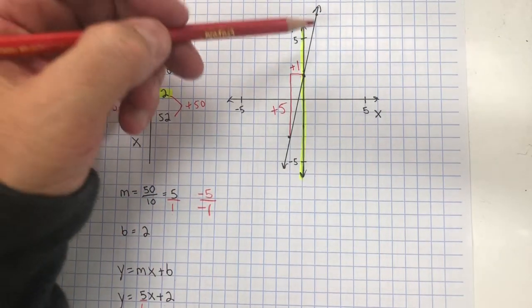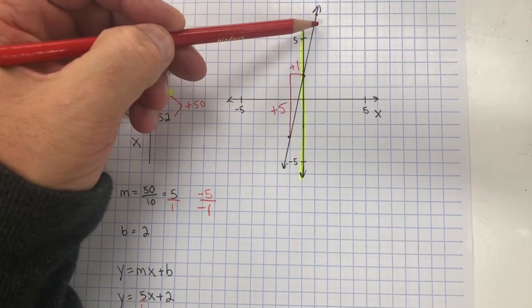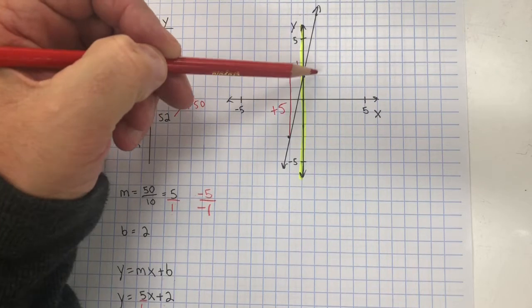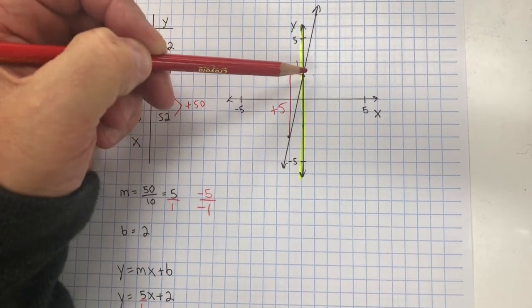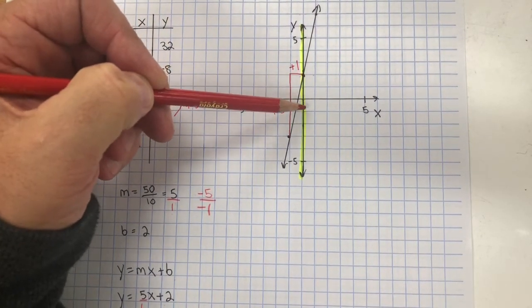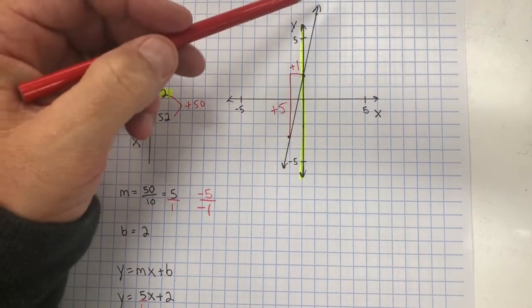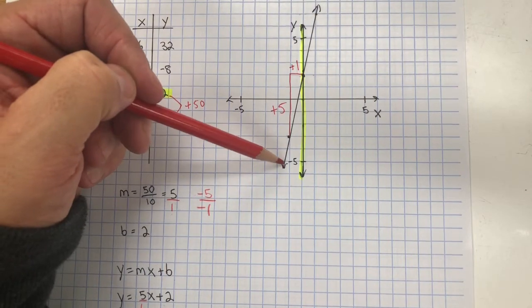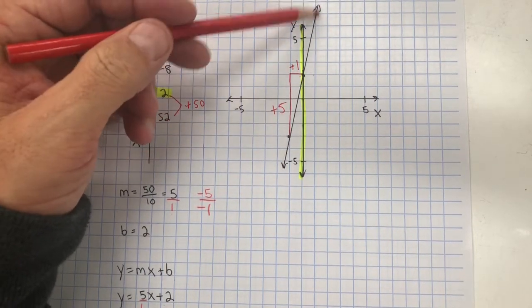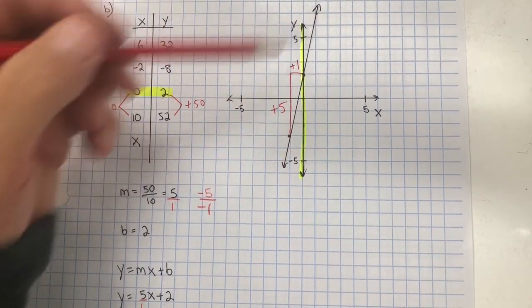But you could also do negative 5 over negative 1, because negative 5 divided by negative 1 is still 5. So we could do the slope as negative 5: 1, 2, 3, 4, 5, over negative 1. And now that we have 3 points, I went ahead and graphed that line.